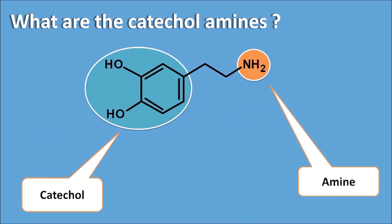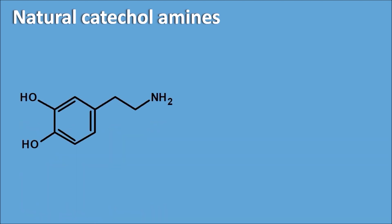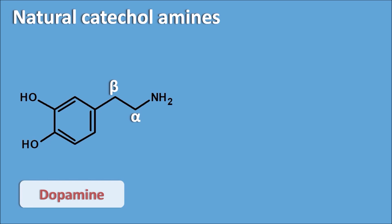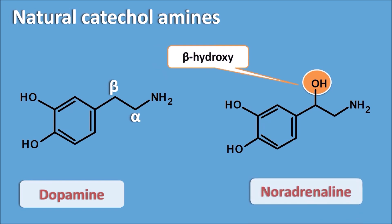Now, what are the natural catecholamines present endogenously in living systems? The first is dopamine — a simple catecholamine with no substitution on the alpha and beta portions. The next is noradrenaline, which is a beta-hydroxy catecholamine having an OH group at the beta position.